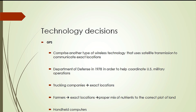GPS is a type of wireless technology that uses satellite transmission to communicate exact locations. GPS has numerous business and individual applications. Large tracking companies use GPS technology to identify the exact locations of their vehicles. Farmers use GPS while riding on tractors to identify their exact location and apply the proper mix of nutrients to the correct plot of land. GPS capability is also available for personal use in handheld computers.